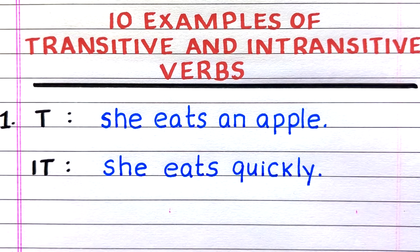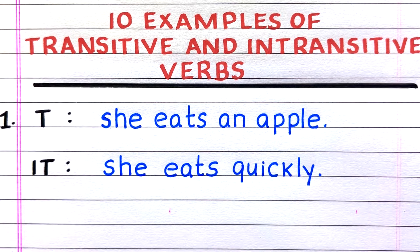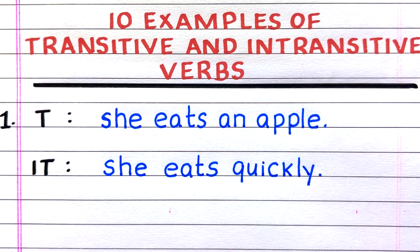First example: 'She eats an apple' is a sentence with a transitive verb, whereas 'She eats quickly' is a sentence with an intransitive verb.